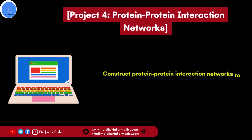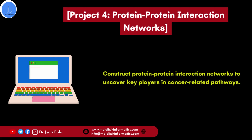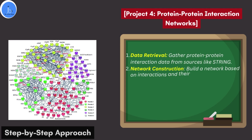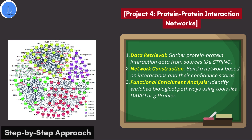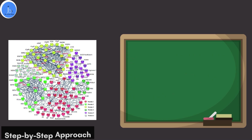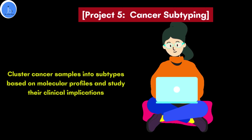The next project can be done on protein-protein interaction networks — construct a protein-protein interaction network to uncover key players in cancer-related pathways. Gather protein-protein interaction data from bioinformatics sources like STRING. Build a network based on interactions and their confidence scores, and then perform functional enrichment analysis to identify enriched biological pathways using tools like DAVID or g:Profiler.